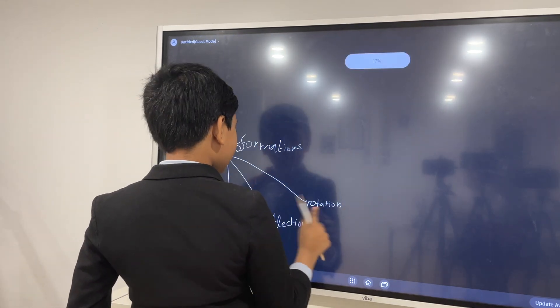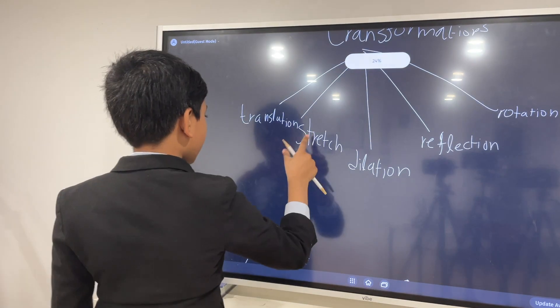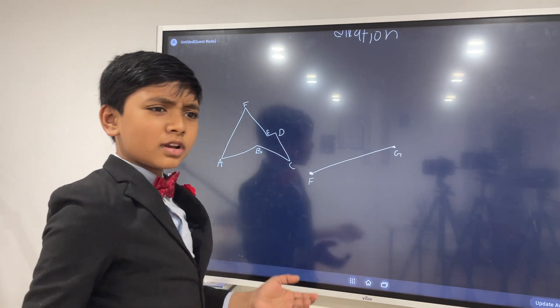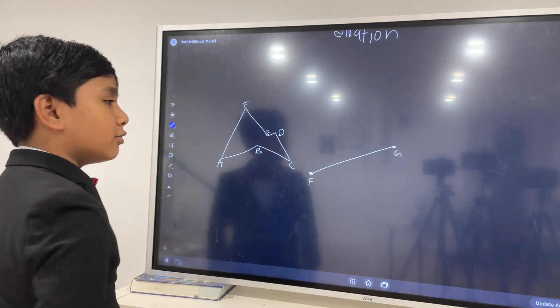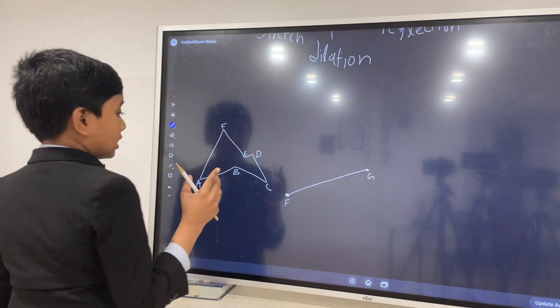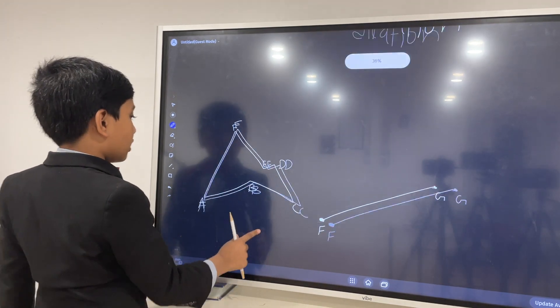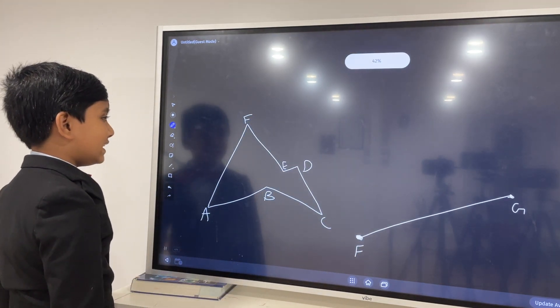So now, what is this first one? Translation is when you move an object. Seems pretty weird, but I mean, it is what it is. So, what happens when you translate a polygon? Like for example, A, B, C, D, E, F over here.